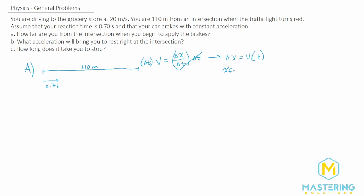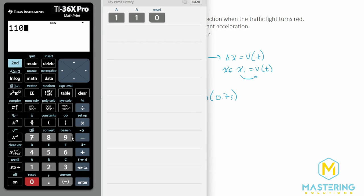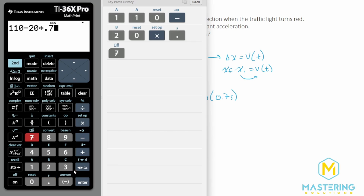If we say x_final minus x_initial is equal to velocity times time, we can move the x_initial over. So x_final is equal to x_initial minus velocity times time. The x_final of where we'll end up is equal to 110 meters minus the initial velocity of 20 meters per second times 0.7 seconds. So 110 minus 20 times 0.7 gives us 96.